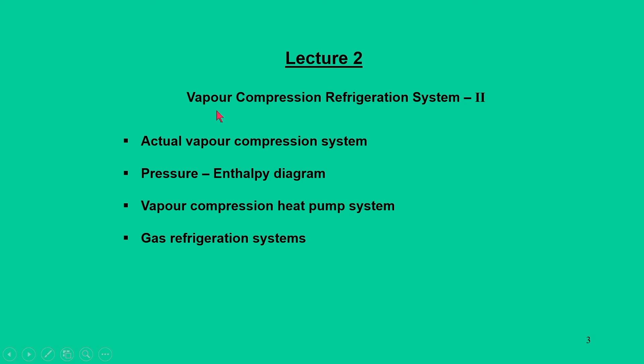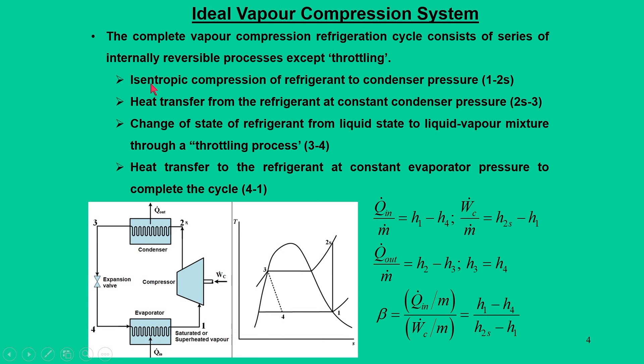We will also discuss vapor compression heat pump systems. The next segment would be vapor compression heat pump systems, where the desired effect is a little bit different from a refrigerant system. Towards the end of the lecture, we will discuss gas refrigerant systems in which the working fluid is air and it operates on a reverse Brayton cycle. This is the entire summary for this lecture.